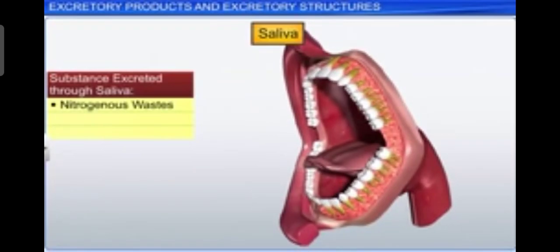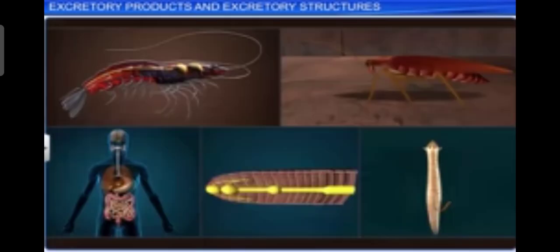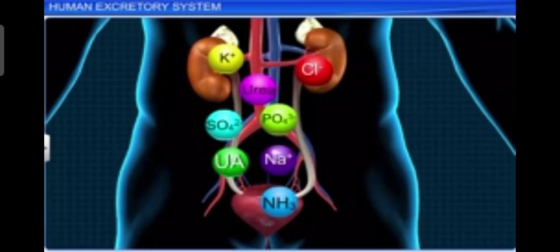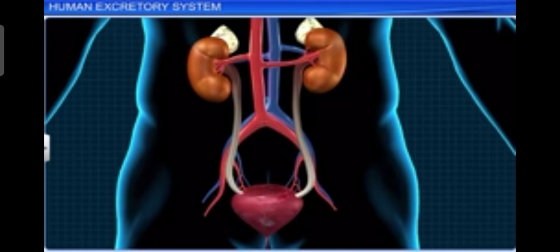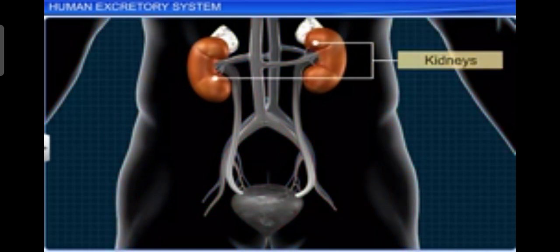Saliva also secretes nitrogenous waste, so it also helps in excretion. In humans, the excretory system consists of a pair of kidneys, one pair of ureters, a urinary bladder, and a urethra. These are the different parts of the urinary or excretory system.